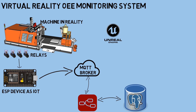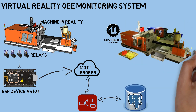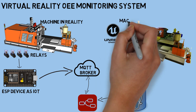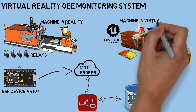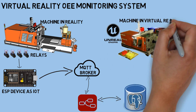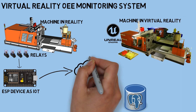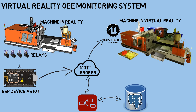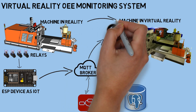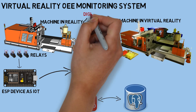To create the virtual reality environment, we use Unreal Engine, and the machine model is created using SketchUp. For receiving MQTT messages, we use the MQTT utilities plugin. Periodically, Node-RED will send a message to the MQTT broker regarding the current machine status, and it is received by Unreal Engine. Then data will be displayed in virtual reality.